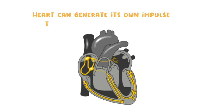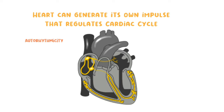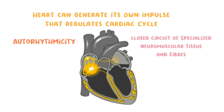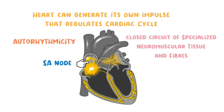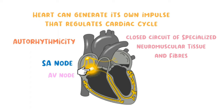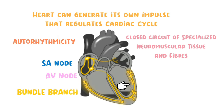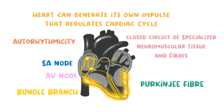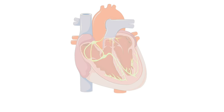The heart can generate its own impulse — this property is known as auto rhythmicity. The conducting system of the heart has two nodes, which are bunches of neuromuscular tissue connected to each other by nerve fibers: the SA node, the AV node, bundle branches, and Purkinje fibers. The SA node is unstable and depolarizes 60 to 80 times per minute.